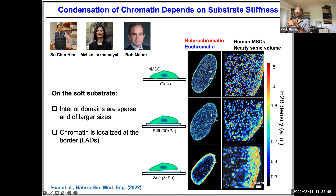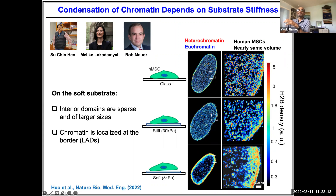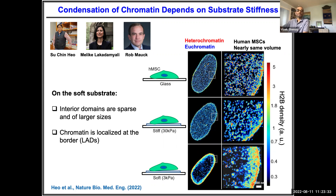More importantly, a lot of chromatin is stacked up against the nuclear lamina on soft substrates compared to stiff. We want to understand why that is, what these domain sizes are, and what leads to this partitioning as a function of stiffness. In ongoing work we are sequencing these cells with RNA-seq and ATAC-seq, and down the road our goal is to predict which genes may be expressed based on the organization.